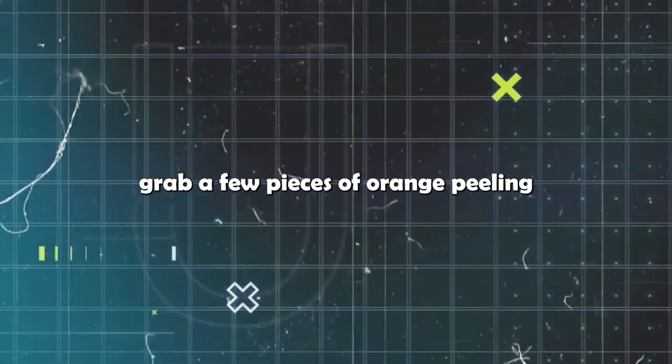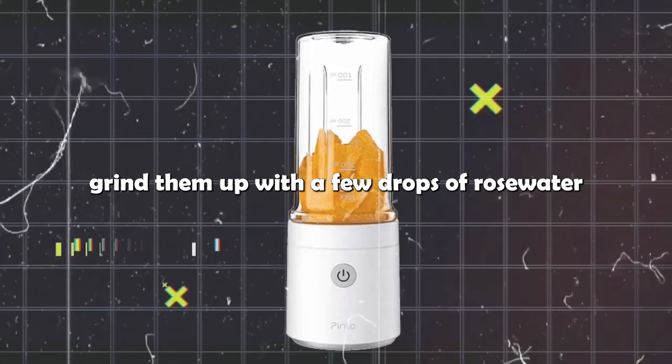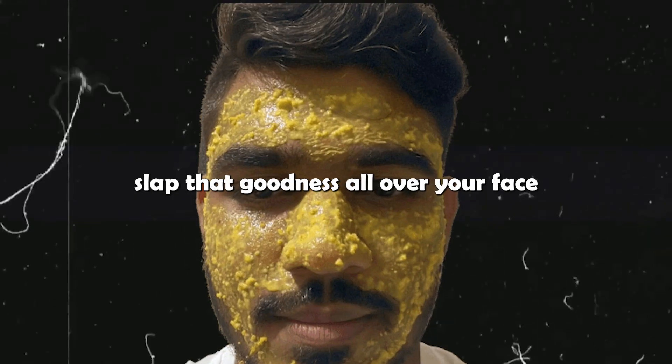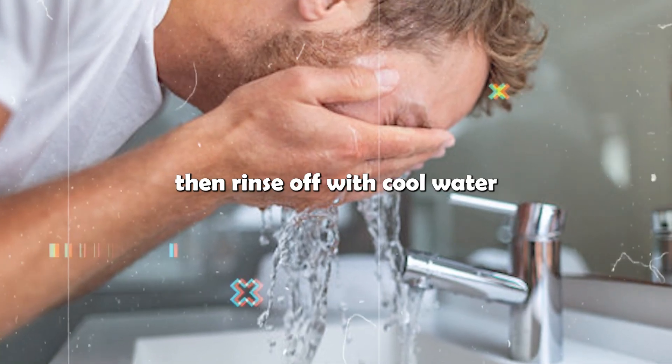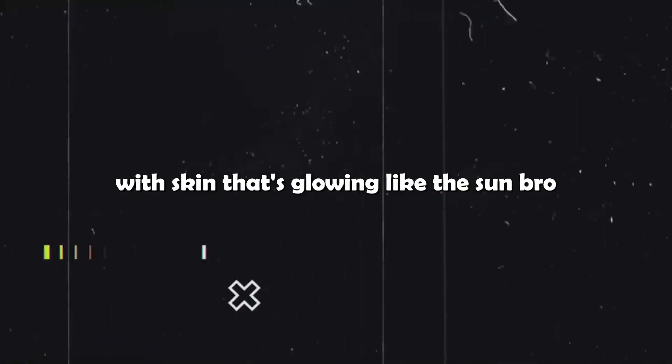And if you're feeling extra fancy, grab a few pieces of orange peel and grind them up with a few drops of rose water to make a smooth paste. Slap that goodness all over your face and let it work its magic for 15 minutes. Then rinse off with cool water and you're ready to take on the day with skin that's glowing like the sun.